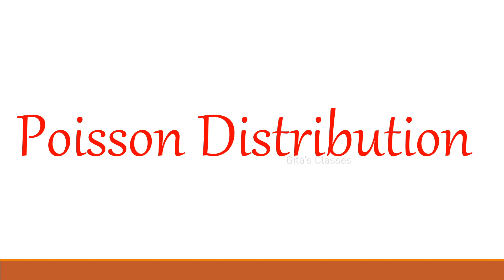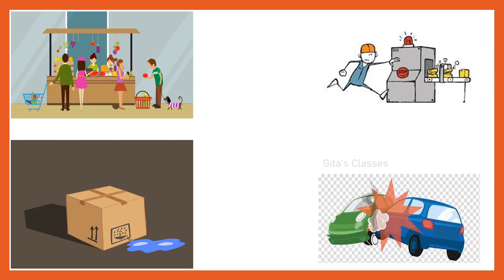Some examples where the underlying random variable can be well approximated by the Poisson distribution: the number of customers arriving at a store checkout line during a given time, say one hour or two hours; the number of defective items produced in a day in a manufacturing company; and the number of fatal traffic accidents in a city in a particular week. All these are discrete events occurring during some unit of time, and this random variable can be approximated by the Poisson distribution.